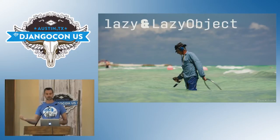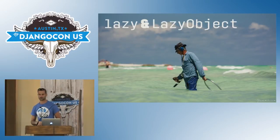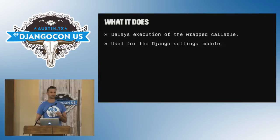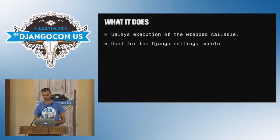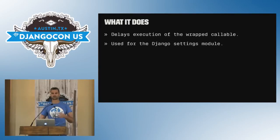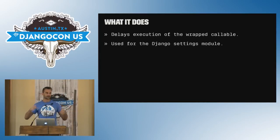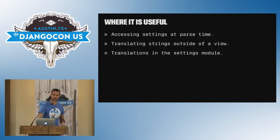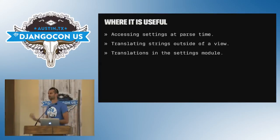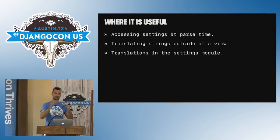The next one I want to look at is the lazy function and the lazy object. We've definitely all used it — Django settings are basically based on that concept. What it does is provide a way of delaying the execution of an object by wrapping a callable in another object. One of the reasons it exists is because when Django loads, some pieces that you rely on in other parts of your code might not be available at the point when you're executing a function.